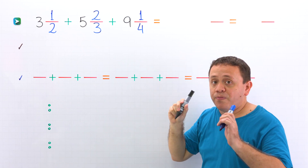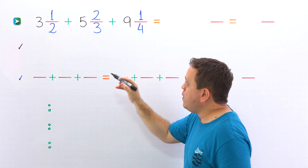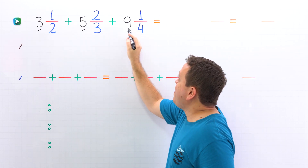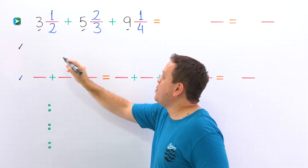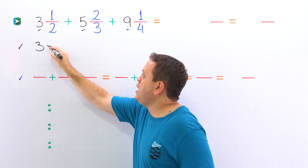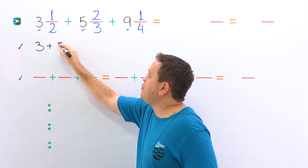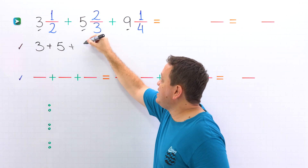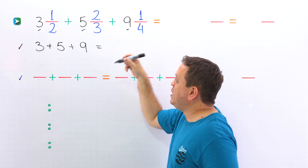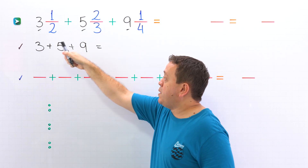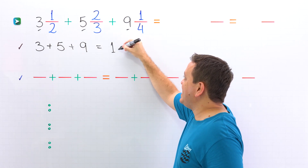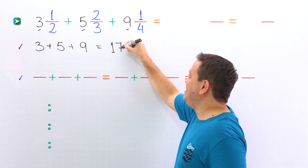To find the sum, first we add the whole numbers. The whole numbers are three, five, and nine. So we put three plus five plus nine, and this is equal to three plus five is eight, plus nine is seventeen.